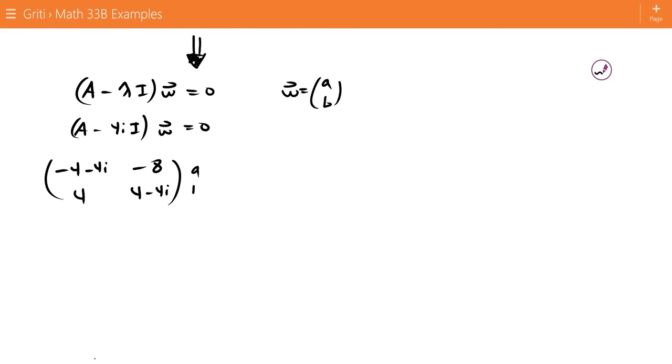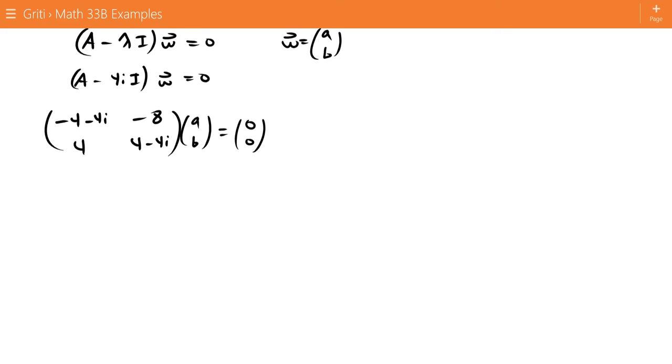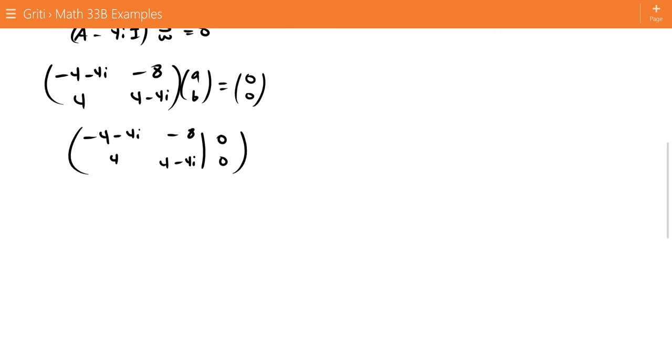We can define W as AB, so we can turn this into an augmented matrix, and we can swap the first and second row, and we get 4 and 4 minus 4i, negative 4 minus 4i, and negative 8.